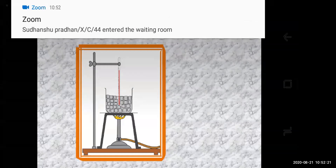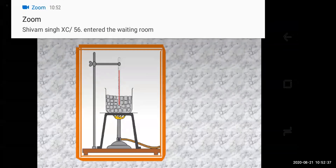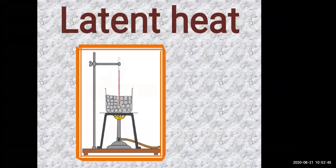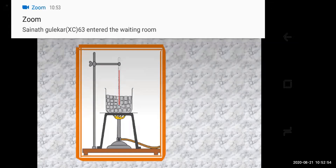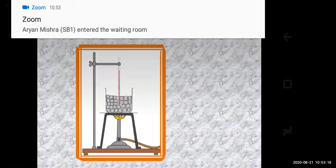From this activity, you will observe that the temperature of the mixture remains zero degrees Celsius until the ice melts completely. The temperature will be constant at zero degrees while ice is melting. Afterwards, when you continue heating, all the ice gets converted into water. The temperature of water will rise and reach a maximum of 100 degrees Celsius. At this temperature, water starts converting into steam — from solid to liquid, then liquid to gaseous state. The temperature remains constant at 100 degrees Celsius until all the water gets converted into steam.